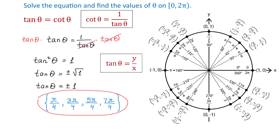Another approach is knowing that tangent of theta is y over x and cotangent of theta is x over y. Then y over x equals x over y either when both x and y are the same — which occurs at pi over 4 and 5 pi over 4 — or when x and y are opposite, which occurs at 3 pi over 4 and 7 pi over 4.